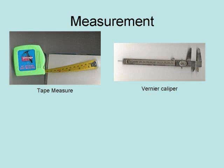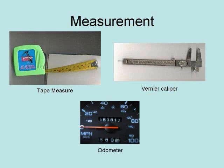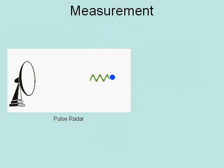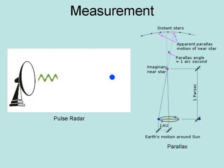The most common ways of measuring space are rulers, such as a tape measure, and for more accuracy, a vernier caliper. Odometers are another common way of measuring distance, and thereby space. Other methods include bouncing light, radio waves, or sound off of an object and using the return time to measure distance. These include radar and sonar. Another way of measuring space is parallax, which uses geometry to measure distances. It is used in astronomy and land surveying.